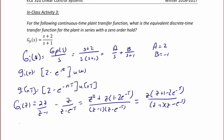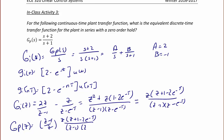And finally, g_p(z) equals (z - 1)/z times z(z + 1 - 2e^(-T)) over (z - 1)(z - e^(-T)). You cancel out the common terms, and the final answer is (z + 1 - 2e^(-T)) / (z - e^(-T)).